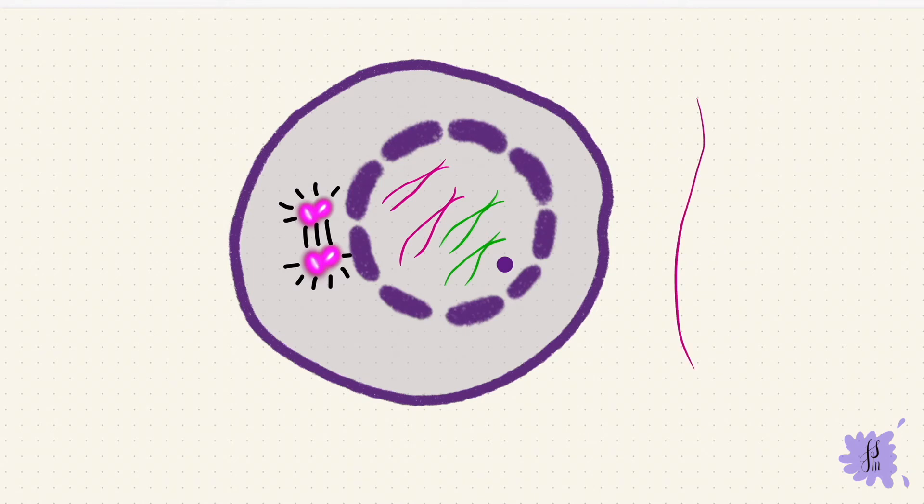Before prophase begins, the chromosomes have doubled, and the doubled chromosomes are called chromatids. These are sister chromatids, and they're held together by the centromere. But they're not very visible at this point. During the prophase, the chromatids coil and they condense, so they shorten and thicken. But they don't become visible clearly until the prometaphase, that's the late prophase.